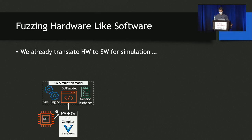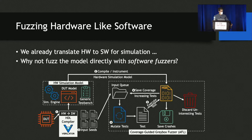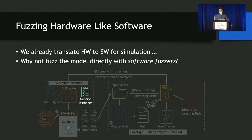Since we already translate hardware to software for simulation purposes, we argue for fuzzing the software model of the hardware directly with software fuzzers. To do so, we leverage Verilator, an open-source HDL compiler, to translate RTL hardware into a software model that can be instrumented during compilation and fuzzed directly with coverage-guided gray-box fuzzers like AFL. Unfortunately, as you probably guessed, it's not quite that simple. There are three key challenges associated with designing a generic fuzzing harness or test bench that can interface hardware simulation models with software fuzzers.